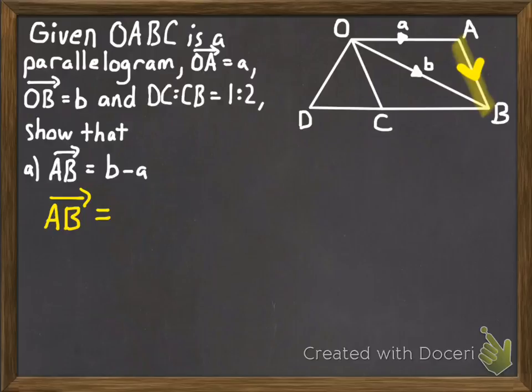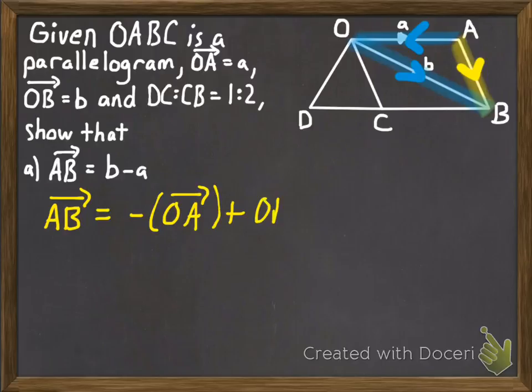Just like we did in the previous example, we're going to use the distances that we know in order to find the distance that we're asked for. And so we're going to use vectors OA and OB to figure out the vector AB. And so we've got to figure out how can you trace from A to B using those two vectors, and that would be along this path. You would go the opposite way of vector OA, and then you would travel down vector OB. So then, vector AB equals the opposite of vector OA plus vector OB. And that's the opposite of a plus b, which of course is b minus a.